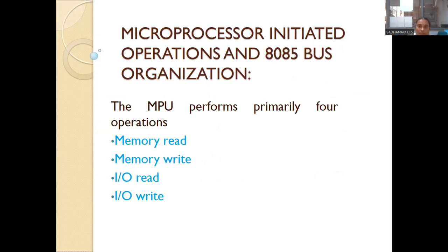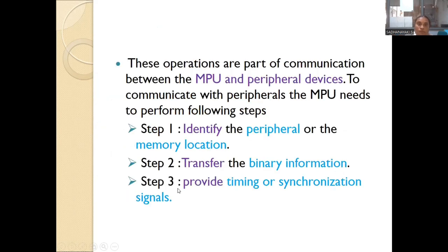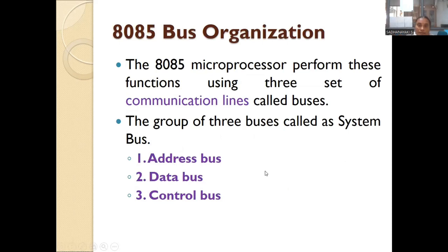The next topic is microprocessor-initiated operations and the 8085 bus organization. A microprocessor primarily performs four operations: memory read, memory write, I/O read, and I/O write. These operations are part of communication between the microprocessing unit and peripheral devices. To communicate with peripheral devices, the MPU needs to perform three steps: identify the peripheral or memory location, transfer the binary information, and provide timing or synchronization signals between the peripheral and the microprocessor. For these operations, the microprocessor needs communication lines — that is the bus organization.